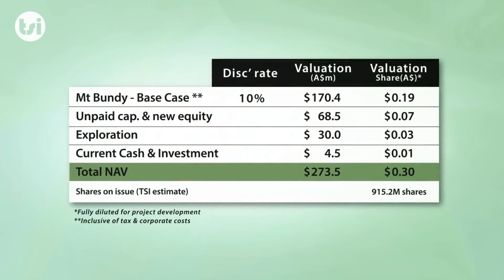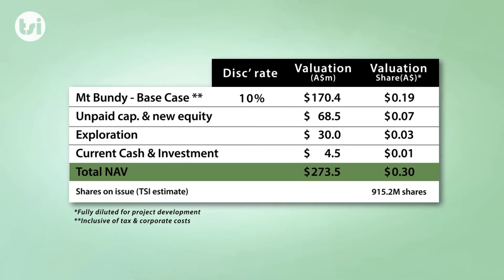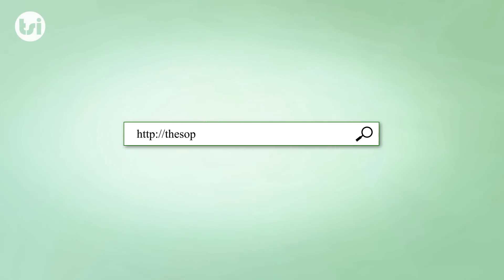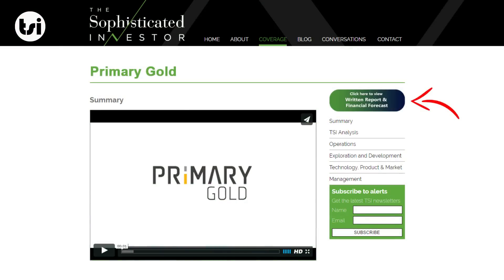We have calculated a valuation for Primary Gold of 30 cents per share. We determine this valuation by completing a detailed cash flow analysis on the Mount Bundy gold project in the Northern Territory. A PDF version of our valuation and financial forecasts is available at the Sophisticated Investor website.